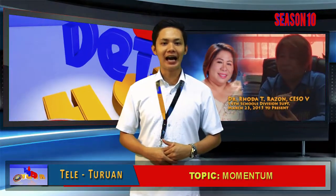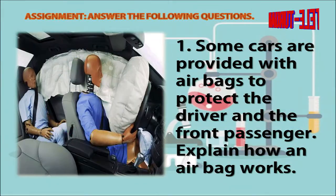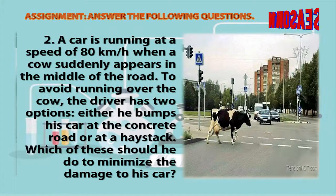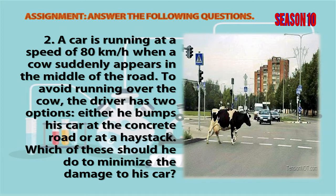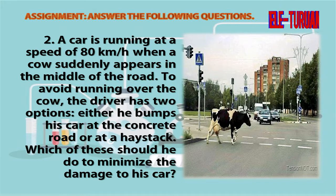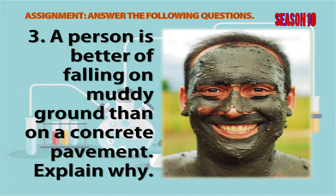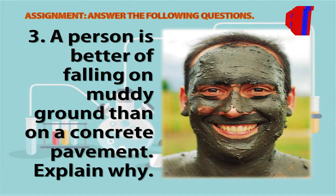For the assignment next week, answer the following questions. Number 1: Some cars are provided with airbags to protect the driver and the front passenger — explain how an airbag works. Number 2: A car is running at a speed of 80 kilometer per hour when a cow suddenly appears in the middle of the road. To avoid running over the cow, the driver has two options: either he bumps his car at a concrete wall or at a haystack. Which of these should he do to minimize the damage to his car? Number 3: A person is better off falling on mud ground than on a concrete pavement — explain why.